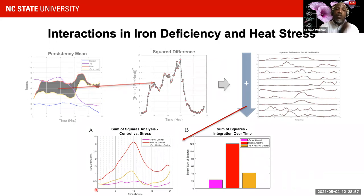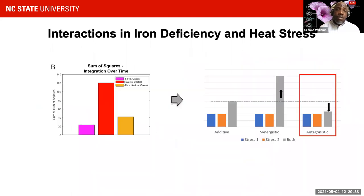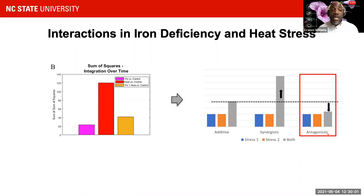We assessed the curve associated with the differential effect of heat versus control, iron deprivation versus control, and combined stress versus control. Summing these time signals and displaying results in a bar graph, the differential effect of iron under control and heat under control are shown alongside the combined stress in yellow. What we see is that the underlying effect of the combined stress is far less than what you would expect by combining the effect of heat and iron deficiency, allowing us to conclude there is an antagonistic effect in terms of the plant's response to both heat and iron deprivation.